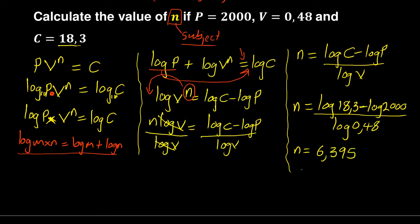So you can see now it is 6.395, so this then becomes your answer. So that's how you solve for, I mean substitute. The question was calculate the value of n, so this is the value of n. But first and foremost you are supposed to make n the subject of the formula.